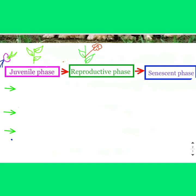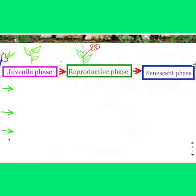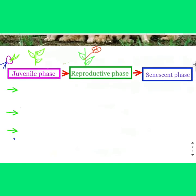The last phase is the senescent phase. So there are three phases: juvenile phase, reproductive phase, and senescent phase. Senescent phase means the organism loses the ability to reproduce, and eventually that leads to death.